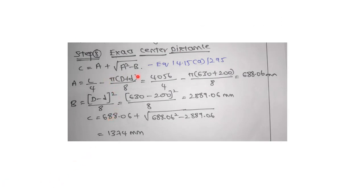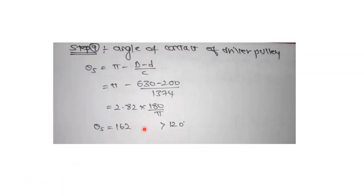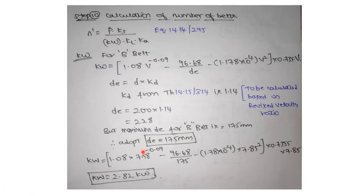Once the standardized pitch length is obtained, calculate the exact center distance using equation 14.15a (page 295), which involves two constants a and b. Substituting a and b gives the exact center distance. Next, calculate the angle of contact of the driver pulley: θs = π − (D − d)/C, which gives approximately 2.82 radians = 162 degrees. Verify this is greater than 120 degrees — this is very important.